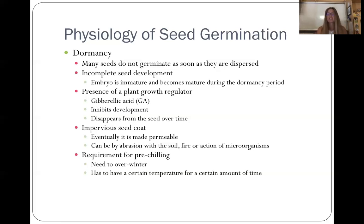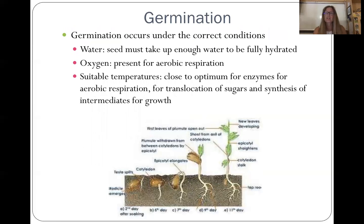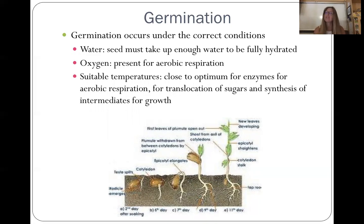We also need the requirement for pre-chilling — a lot of our seeds have to overwinter before they're going to develop. Germination occurs under the right conditions: you have to have water, so there must be enough water for the seed to fully hydrate, because this is an enzymatic process and water is the basis for all biological chemistry. You have to have oxygen — it has to be present for aerobic respiration. This plant doesn't have leaves yet, so it has to get its energy by breaking down the starch in the seed through aerobic respiration. And you have to have the right temperature, because this is an enzymatic process with a lot of enzymes involved and they must be at their optimal conditions to work.